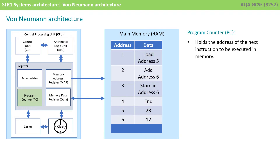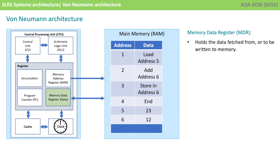The program counter always holds the memory address of the next instruction to be executed. Once we fetch this address from the program counter, we increment its contents by one so it points to the next instruction to be executed. The memory address register holds the address of where data is to be fetched from or stored into. The memory data register holds any data which has been fetched from memory or is about to be written to memory. The accumulator holds the results of calculations which have been performed by the arithmetic logic unit.